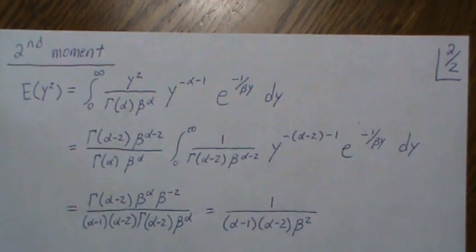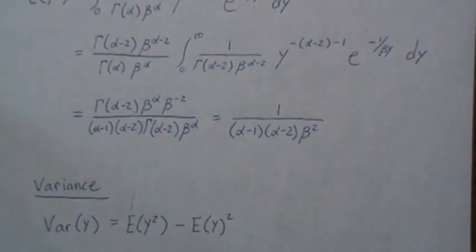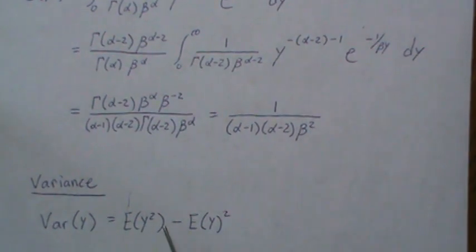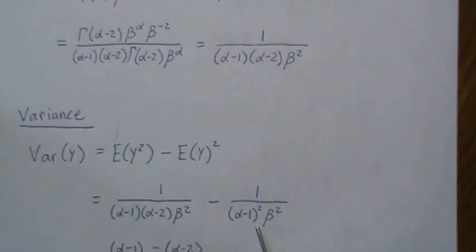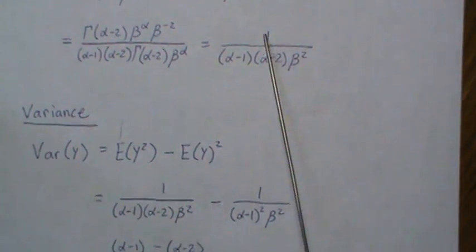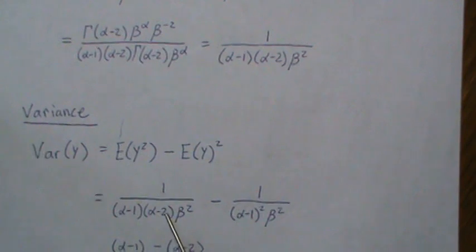Well, now we have enough information to calculate the variance. The variance is the expected value of y squared minus the mean squared. So we stick in the values that we just calculated. And the mean was 1 over this, but we're squaring it, so you have to square both.